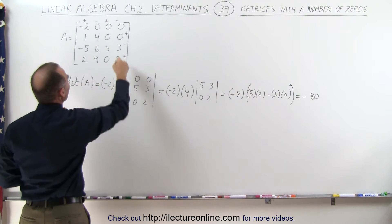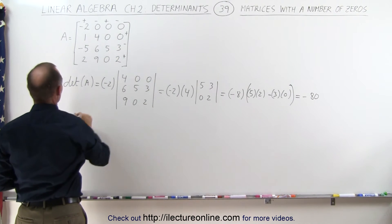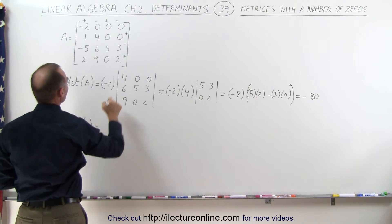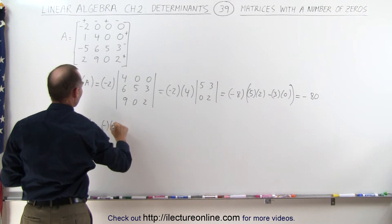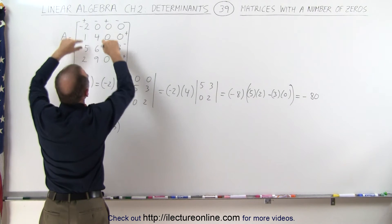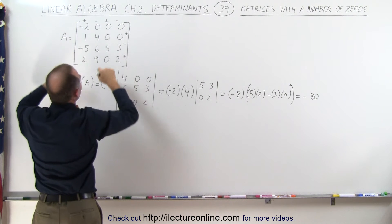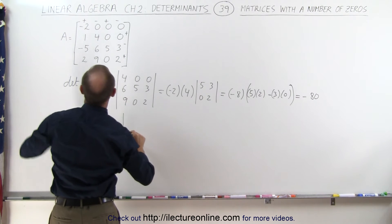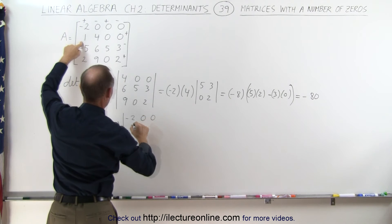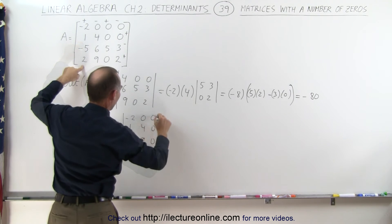So when we then take this element right here, we can say that the determinant of the matrix A is equal to negative times 3. And now when we take that, we have these nine elements remaining to give us a 3 by 3 matrix. So we have a minus 2, 0, 0, 0, 1 and we have the 2, 9 and 0.